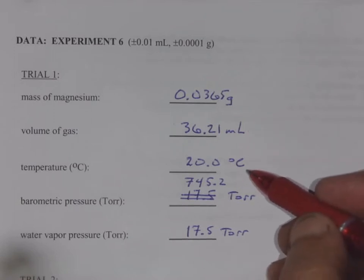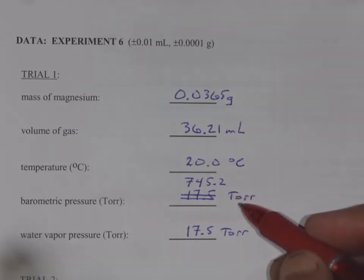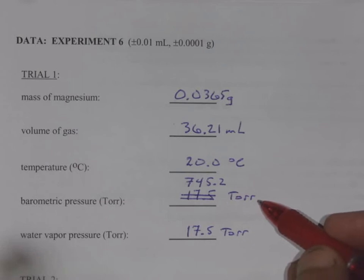The temperature in the room the day we did the lab was 20 degrees Celsius. The barometric pressure is 745.2 torr. One torr is one millimeter mercury, so we could also call it 745.2 millimeters mercury. But since we're asking for torr, we'll stick to torr there.